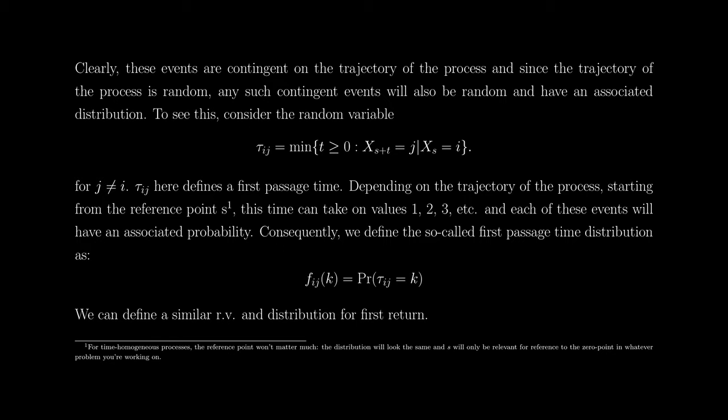For time-homogeneous processes, the reference point won't matter much — the distribution will look the same, and s is only relevant as a reference to the zero point in the problem. So for convenience, we'll treat the reference point as zero going forward. These probabilities are often very difficult to evaluate for most stochastic processes, but in the context of Markov chains, we have rather elegant strategies for extracting the relevant statistics.